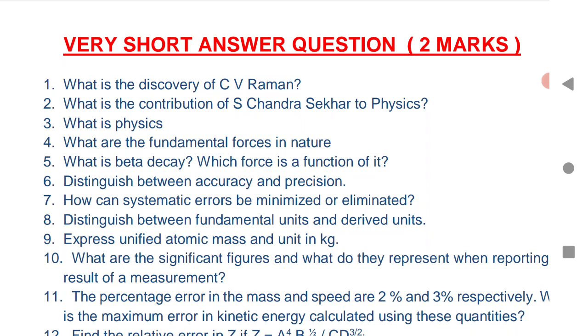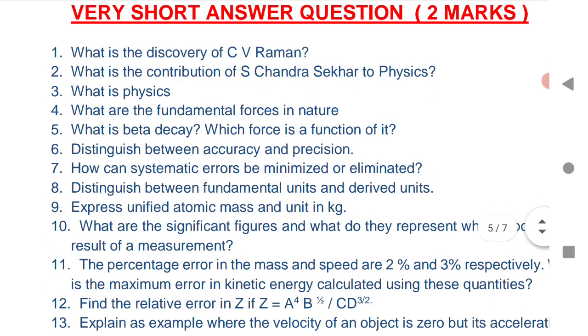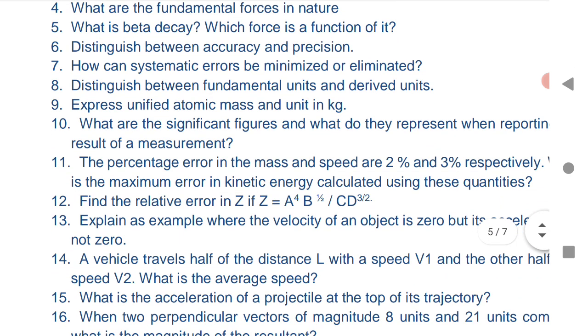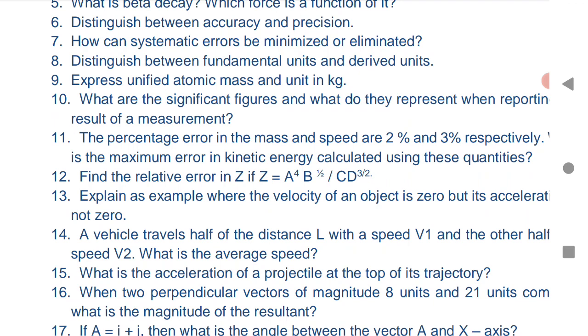The first question is what is the discovery of CV Raman and second is contribution of Chandrasekhar limit. What is physics? What are the fundamental forces available in nature? Beta decay. Sixth is accuracy and precision. Seventh systematic error can be minimized.